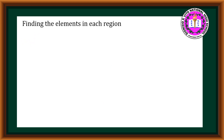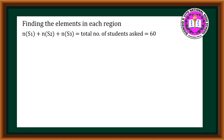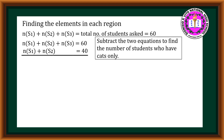To find the elements in each region, we use the equation S₁ + S₂ + S₃ = 60, the total number of students. Subtracting to find students with cats only: (S₁ + S₂ + S₃) = 60 minus (S₁ + S₂) = 40 students who have dogs. Therefore, S₃ = 60 − 40 = 20.